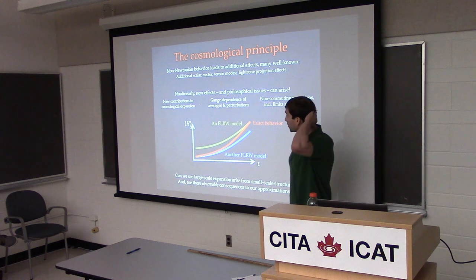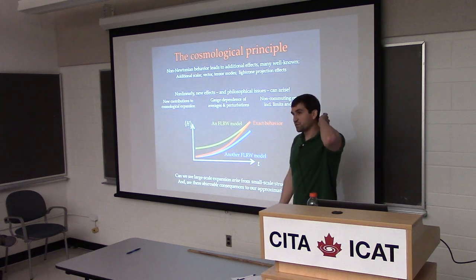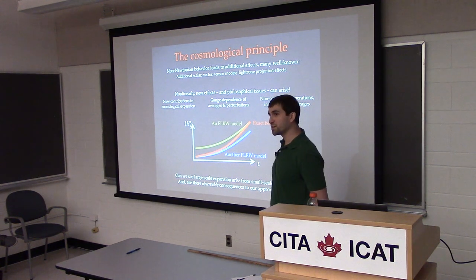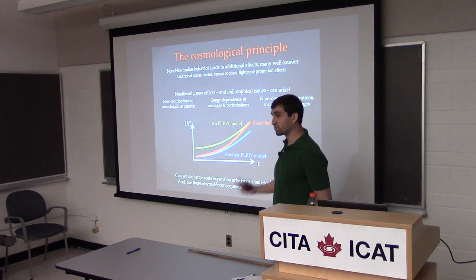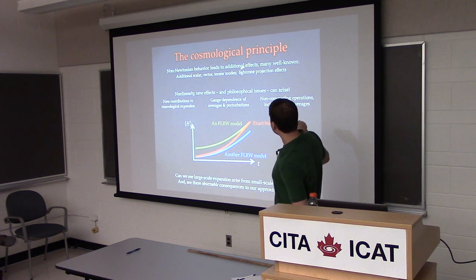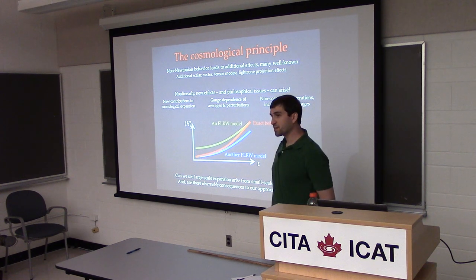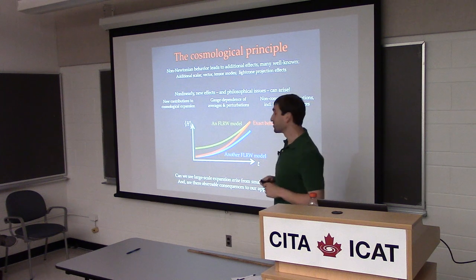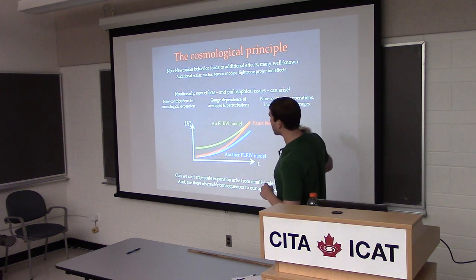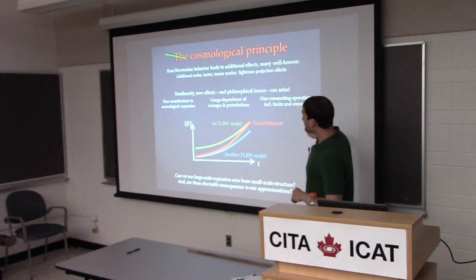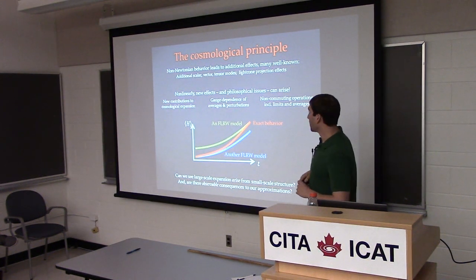We can ask: are there nonlinear corrections to the behavior we see when we use these models? There are all sorts of non-Newtonian behavior commonly studied in cosmology — different scalar, vector, and tensor modes, essentially frame dragging effects, gravitational waves. We also have these light cone projection effects: the influence of the metric on light rays as they travel to us, which encompasses things like time delays or gravitational lensing.